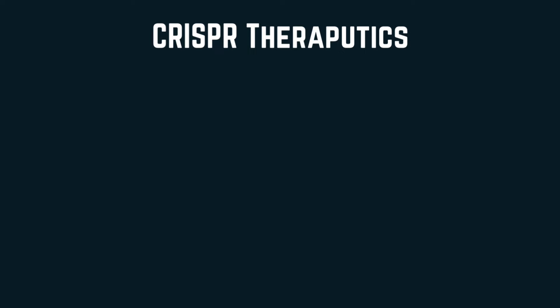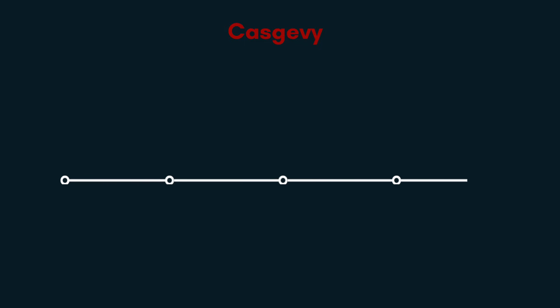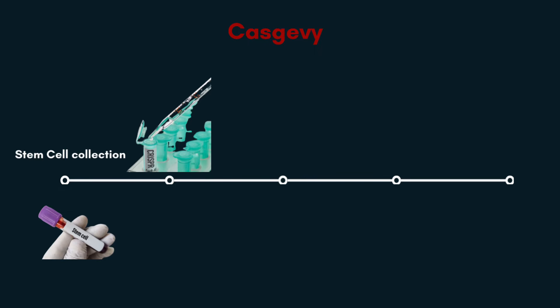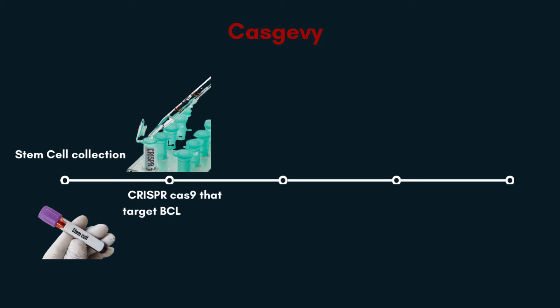Now for approved CRISPR-based therapeutics. Casgevy is a treatment for sickle cell anemia that got FDA approved in late 2023 as the first ever CRISPR-based treatment. The treatment involves several steps, starting with stem cell collection from patients. The collected stem cells are then edited ex vivo using CRISPR-Cas9 targeting the BCL11A gene to reactivate fetal hemoglobin production.